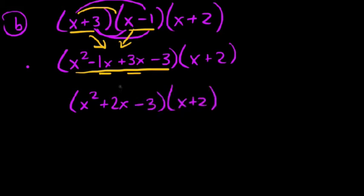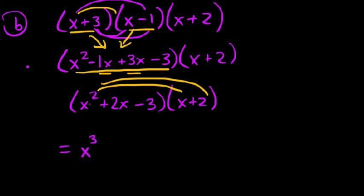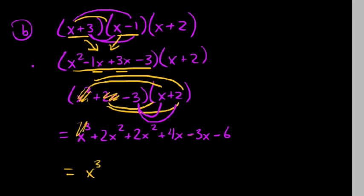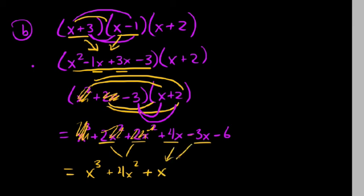Now we distribute. x squared times x is x cubed. x squared times 2 is 2x squared. Then 2x times x is another 2x squared. 2x times 2 is 4x. Negative 3 times x is negative 3x. Negative 3 times 2 is negative 6. Cleaning this up: x cubed has no like terms. 2x squared plus 2x squared gives 4x squared. For x to the first, 4x minus 3x is positive 1x. And negative 6 is our constant. So the product of those three binomials is x cubed plus 4x squared plus x minus 6.